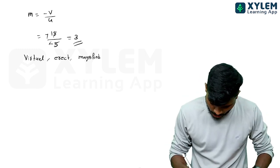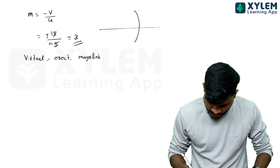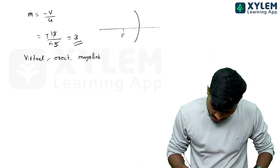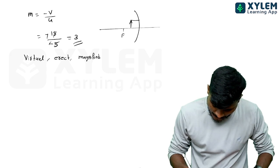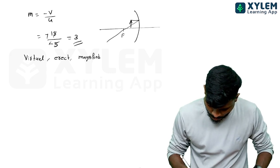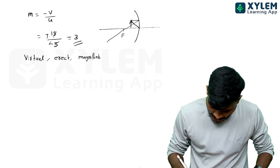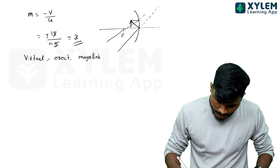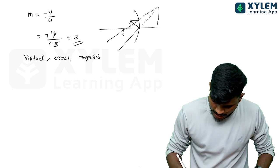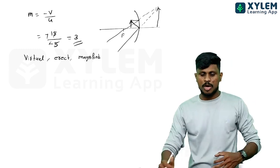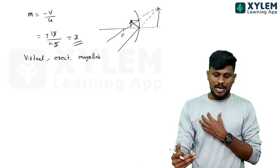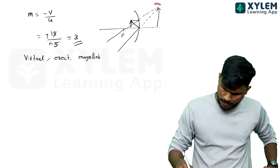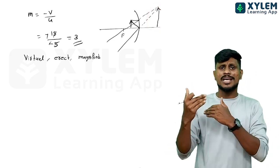Now let's look at the diagram. This is the mirror. The focus is at 7.5cm, negative, on the left. After reflection, rays turn along the optical axis. You can see the image formed behind the mirror — a virtual, erect image.